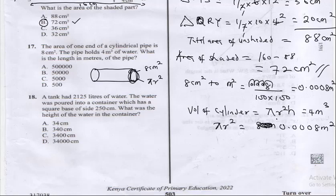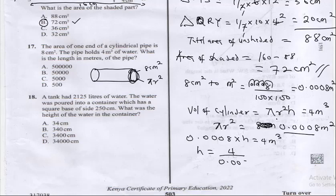Replacing pi r squared with 0.0008, we get 0.0008 times h equals 4 meter cubed. So h equals 4 over 0.0008. To divide these, multiply both numerator and denominator by 10,000 — moving the decimal 4 places.